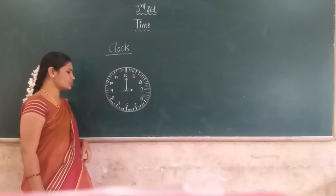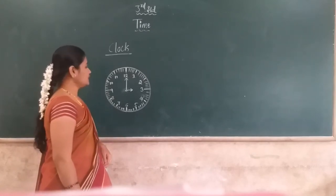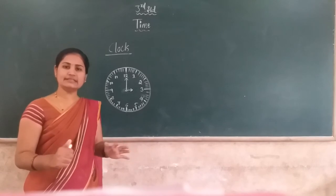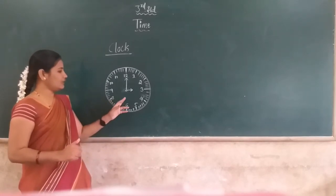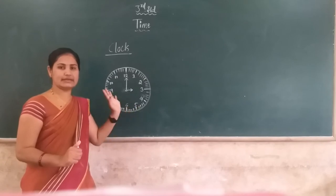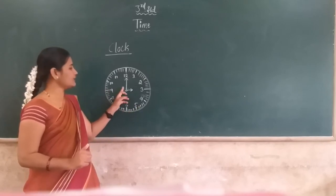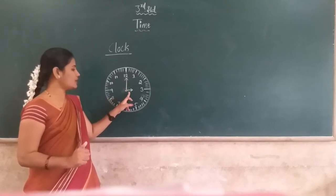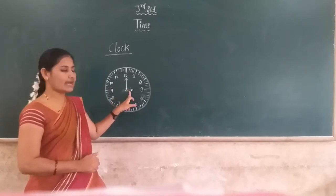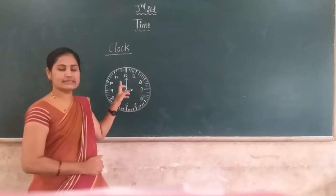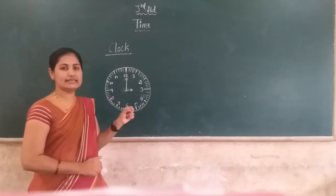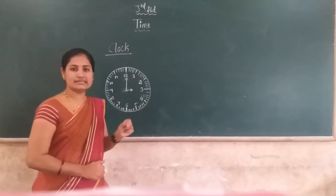Dear student, how do we know the time? The different positions of the hands indicate the time. In this clock, the time is exactly 3 o'clock. The minute hand is at 12 and the hour hand is at 3, so the time is exactly 3 o'clock.